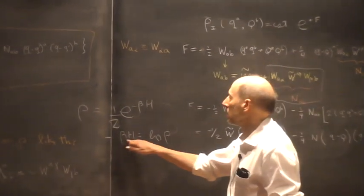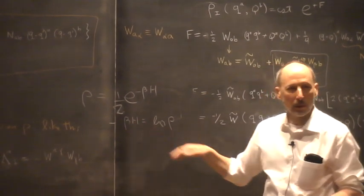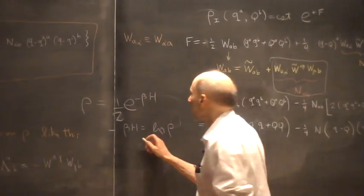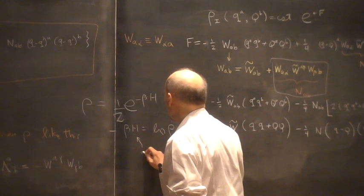And so it'll be, this beta h will always be positive, so you always get a positive, as I said, this is called, sometimes called the modular Hamiltonian.